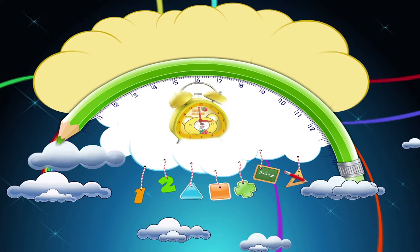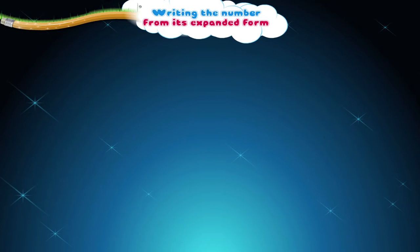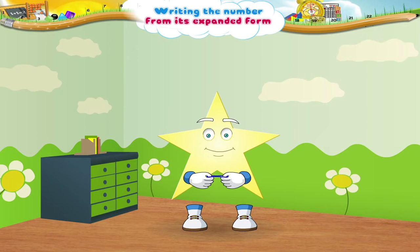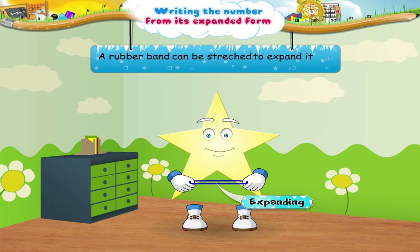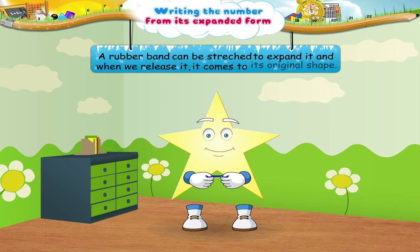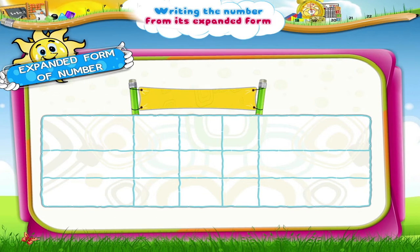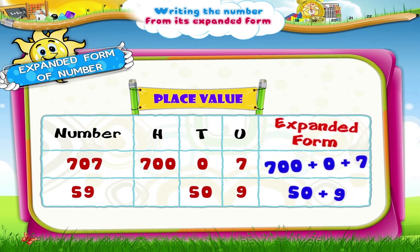Writing the number from its expanded form. Oh Starry, you like to play with rubber bands, don't you? A rubber band can be stretched to expand it, and when we release it, it comes back to its original shape. Similarly, you have seen that numbers can also be expanded by writing their place values in addition form.